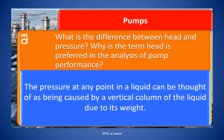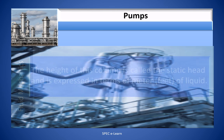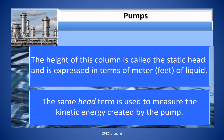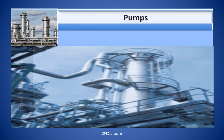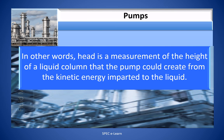The pressure at any point in a liquid can be thought of as being caused by a vertical column of liquid due to its weight. The height of this column is called static head and is expressed in terms of meters of liquid. The same head term is used to measure the kinetic energy created by the pump. In other words, head is a measurement of the height of a liquid column that the pump could create from the kinetic energy imparted to the liquid.